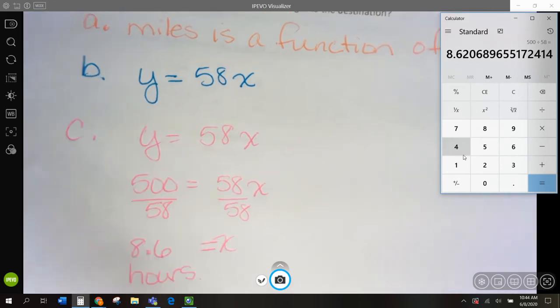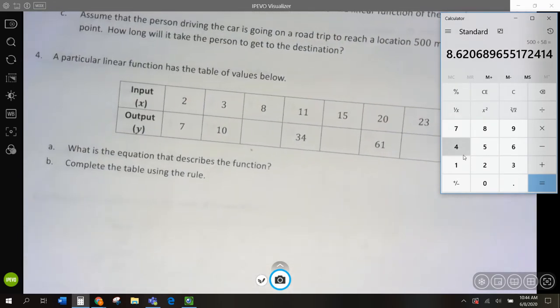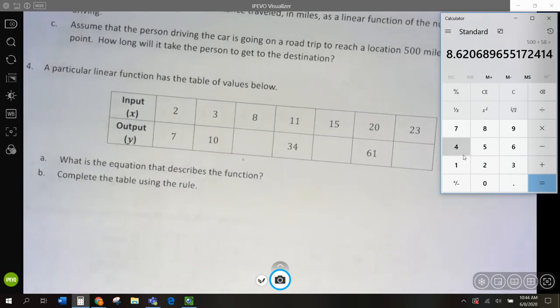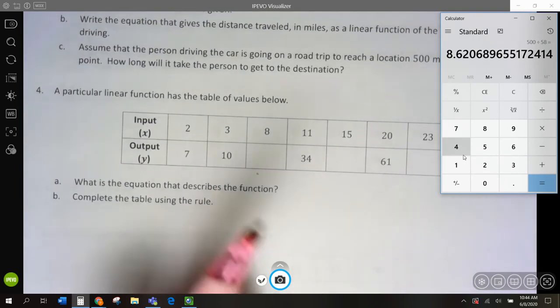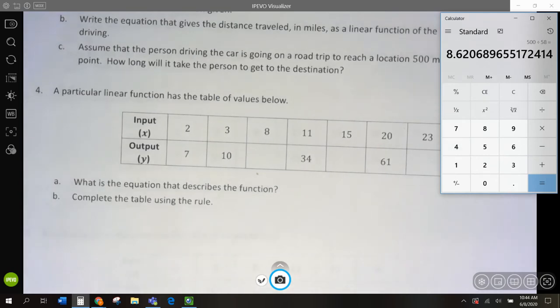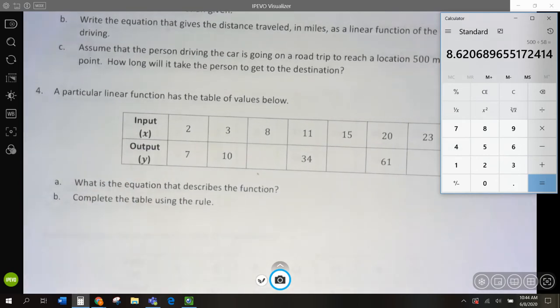Let's go to 4. 4 is a little trickier. We have this equation, and they want us to describe the linear function. But I'm going to show you something. If I go 7 divided by 2, I get 3.5. If I go 10 divided by 3, I'm not getting the same number. So, I don't have that proportionality quite yet here.